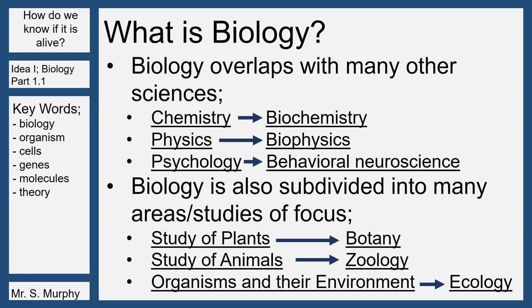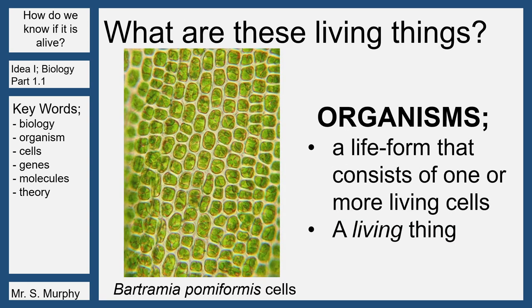Biology is also subdivided into many of its own areas of focus. If you want to study plants, that's botany. If you want to study animals, that's zoology. And organisms and their environment — you're looking at ecology, how all of these living things are interacting with all of the non-living things in their space. So what exactly are these living things? We refer to them as organisms. An organism is a life form that consists of one or more living cells — it's essentially a living thing. Congratulations, you're an organism.